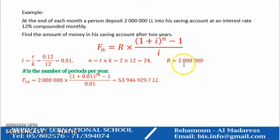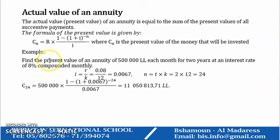So we obtain F24. We replace R by 2 million, i by 0.01, and n by 24. We obtained 53 million 946,929.7 Lebanese lira.